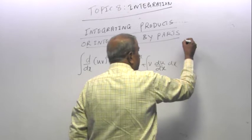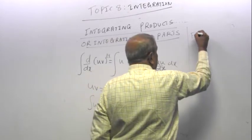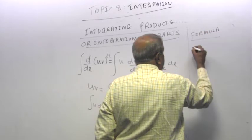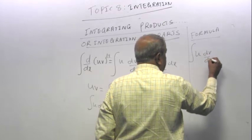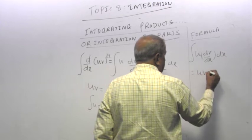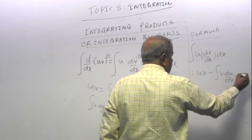So therefore, it is the formula which you have in the formula book. Most of you need is integral u dv/dx dx equal to uv minus integral v du/dx dx.